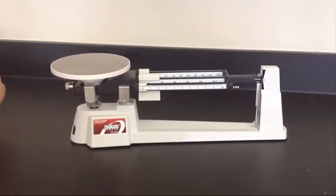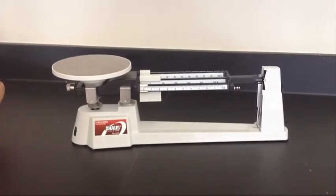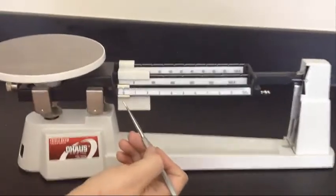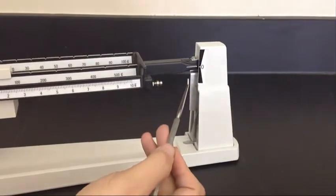To calculate the mass of an object, we use a triple beam balance. The first thing to check for when using a triple beam balance is that the weights are over to the left hand side on zero, and that the beam is balanced with zero.